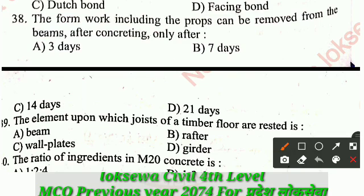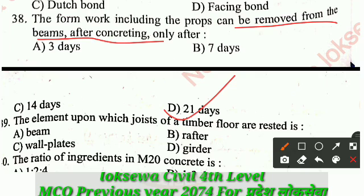Question number 38: The formwork including the props can be removed from the beam after concreting only after: A - 3 days, B - 7 days. The correct answer is 21 days - the props can be removed from the beam after concreting after 21 days.